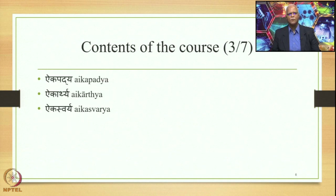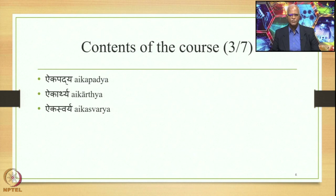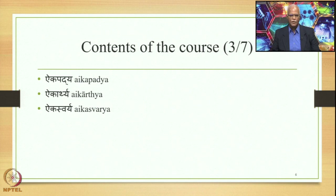We shall also study three important features: Aikapadya, Aikarthya, and Aikasvarya. Given a sentence as the input of the Samasa with multiple Padas — taking the previous example of Radnip Purusha Gatchati from which Raja Purusha as a compound is derived — what happened is that there were two Padas as input and the output returned is one Pada. Two Padas becoming one — this is the major feature of the compounding process, termed Aikapadya, and it is an essential feature.